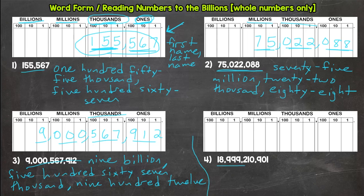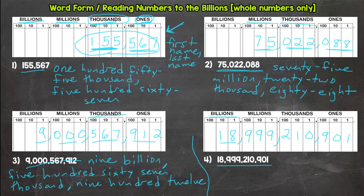Let's do number four — we got a little bit larger in value here and this one's going to be a long one. We have eighteen billion, nine hundred ninety-nine million, two hundred ten thousand, nine hundred one. Read as is: eighteen billion, nine hundred ninety-nine million, two hundred ten thousand, nine hundred one.